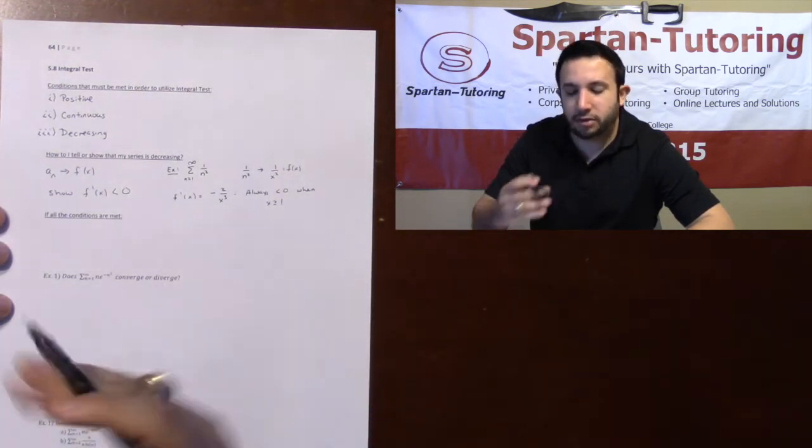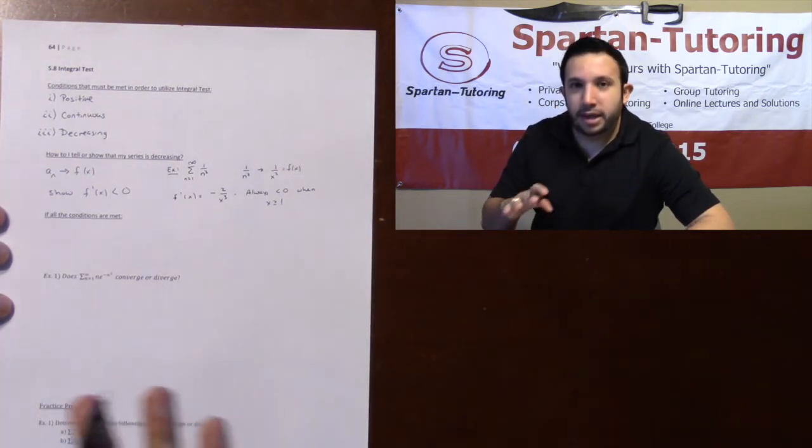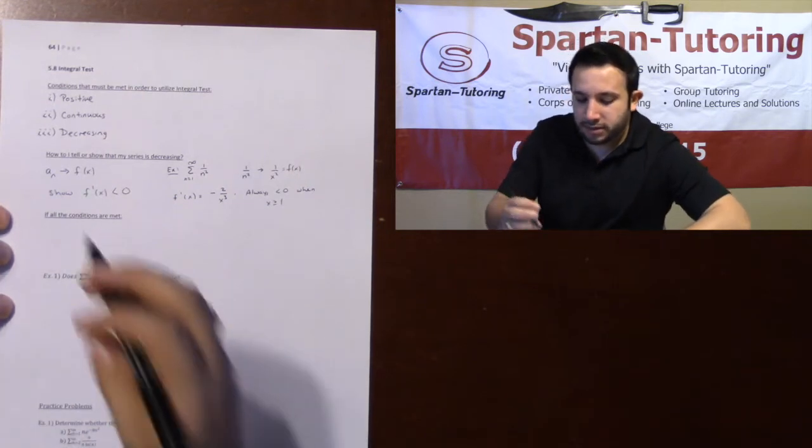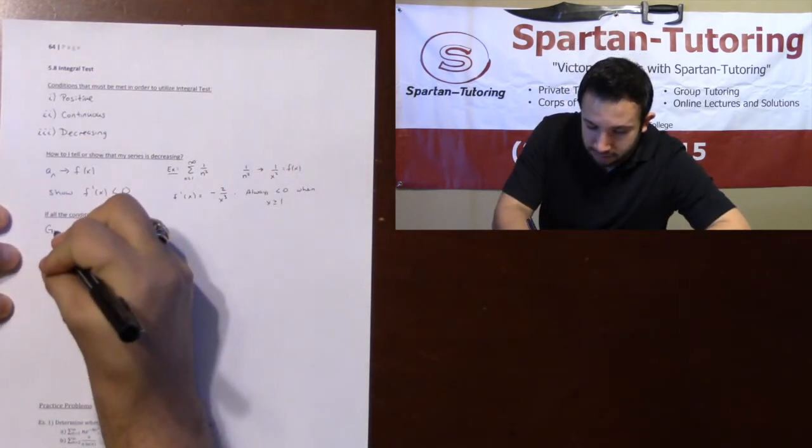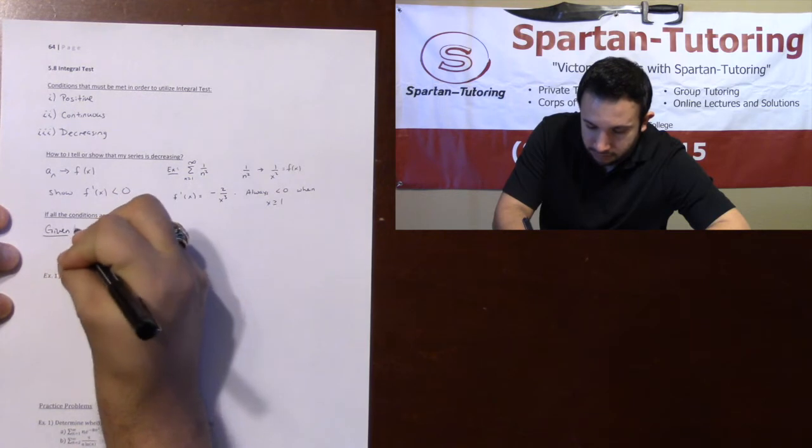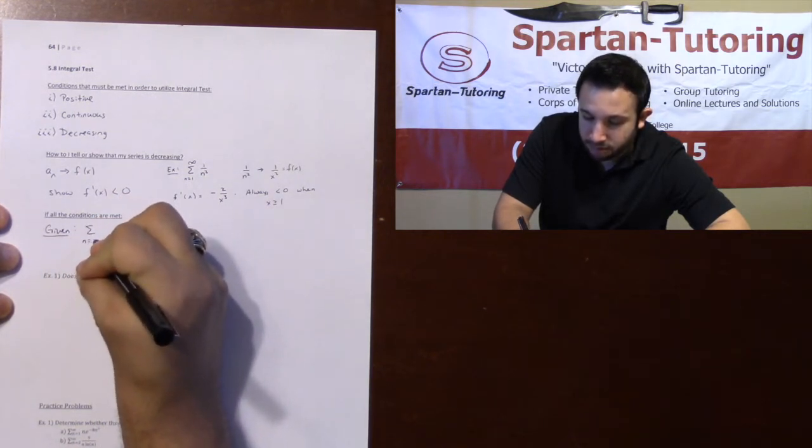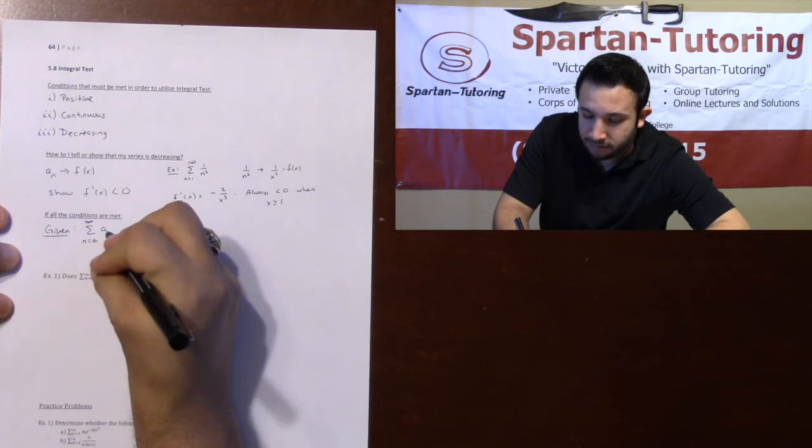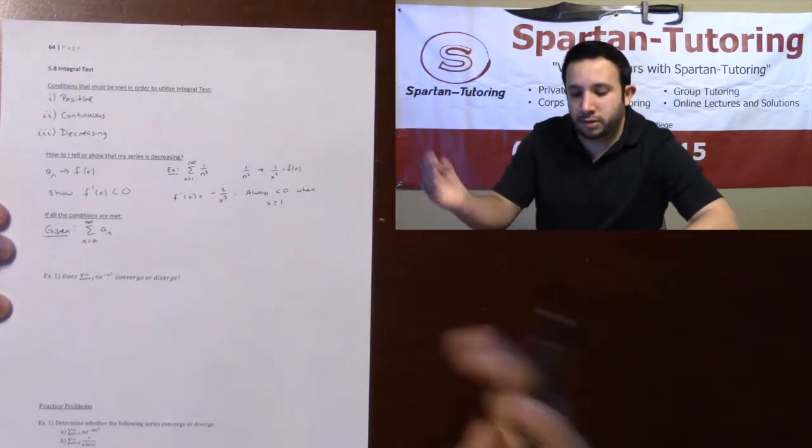So that's how I show that it's decreasing. Now, if all the conditions are met and you are given some sum from n equals a to infinity of some aₙ, where a is just some number wherever it starts...